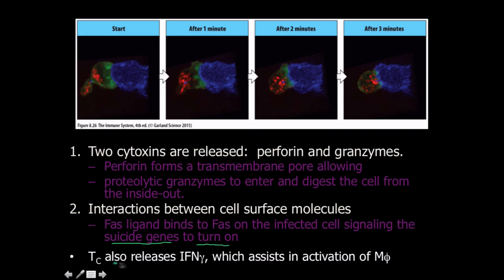Cytotoxic T cells also release interferon-gamma, which assists in the activation of macrophages. The macrophages then come in and clean up the tidy apoptotic corpse that has been produced.